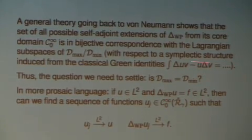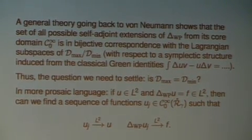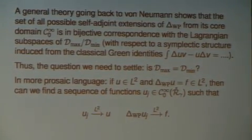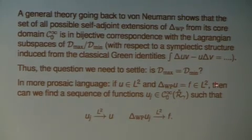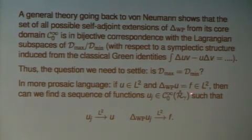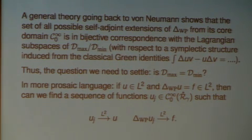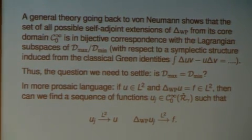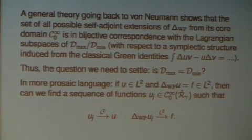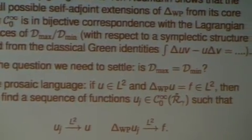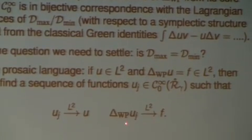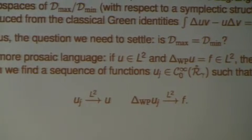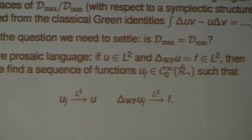Essential self-adjointness means D_min equals D_max. In down-to-earth language, if you have a function u in L^2 whose Laplacian is in L^2, then you can approximate it in the graph norm: you can find a sequence of extremely nice functions u_j — smooth, compactly supported away from the singular set — such that u_j converges to u in L^2 and the Laplacian of u_j converges to the Laplacian of u in the L^2 norm. This is essentially a regularity theorem.